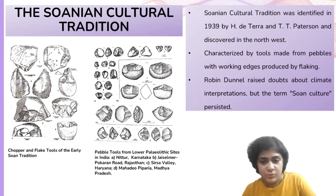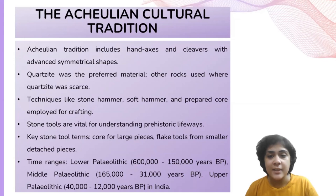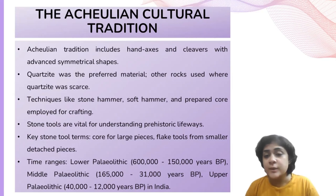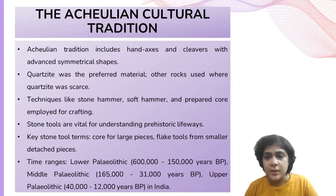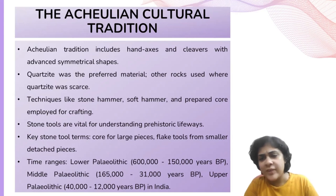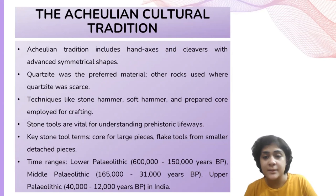The term 'Acheulian' refers to tool assemblages consisting of hand axes and cleavers, characterized by their advanced and increasingly symmetrical shapes. Quartzite was the preferred material for crafting these tools. In regions where quartzite was not naturally available, Acheulian groups utilized other rocks like limestone in the Bhima basin, dolerite and basalt in Maharashtra, and fossil wood in Bihar and Bengal. Various techniques were employed including stone hammers, soft hammers, and prepared core techniques to detach flakes from larger rocks and shape them into implements.